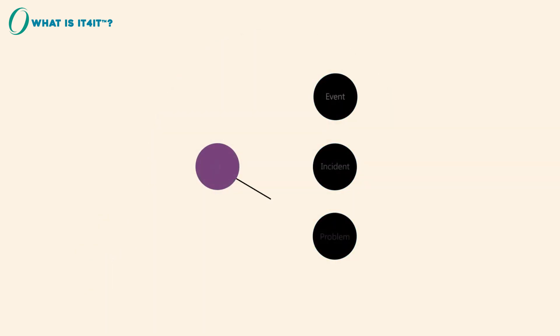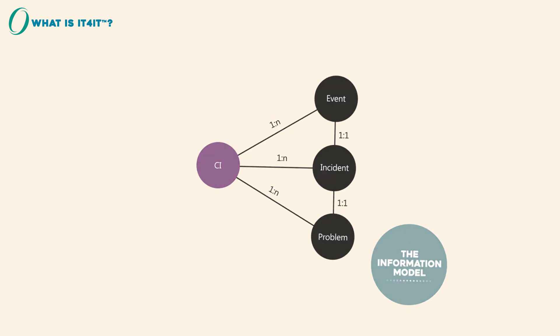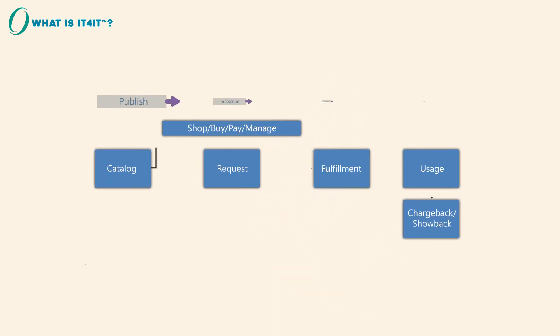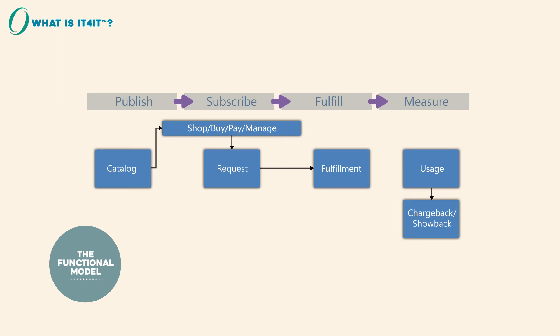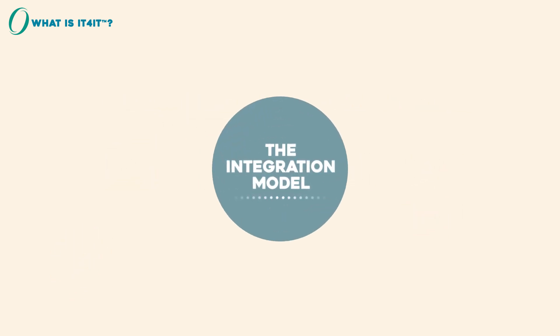The information model comprises the set of data objects within the value chain and defines their relationships. The functional model of the IT for IT reference architecture identifies and defines one of the essential building blocks — functional components that create or consume data objects — and there will soon be an integration model.